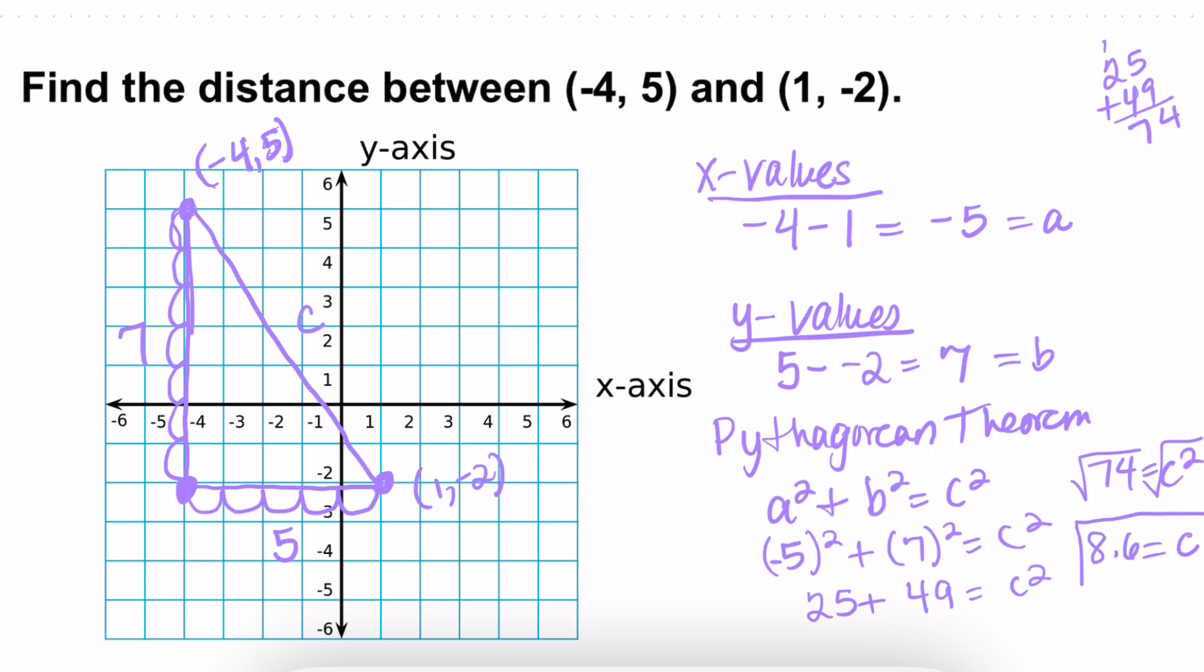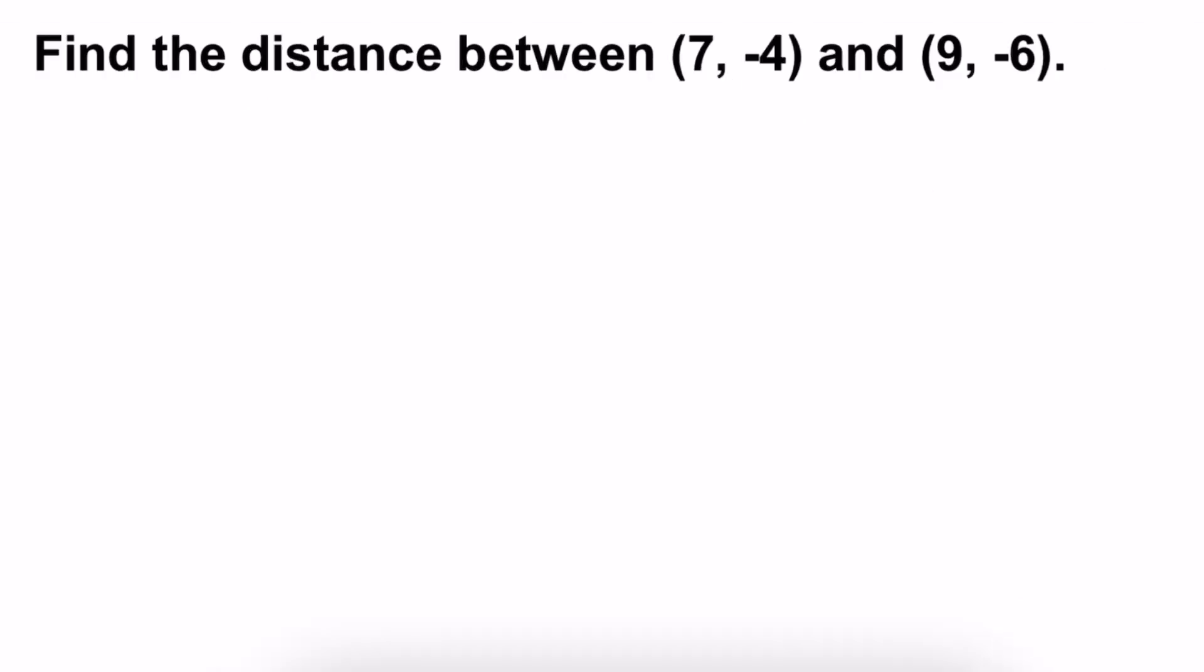And so that's going to be the distance between two points that are not on a straight line. From here, if they did not give you a grid, you still can use the same concept.